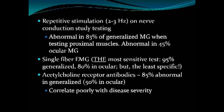Single fiber EMG is the most sensitive test for myasthenia, picking up 95% of generalized myasthenia and about 80% of ocular. It is difficult to perform, however, and is the least specific — many other conditions can reveal abnormalities on single fiber EMG. Frequently, a blood test is sufficient: the acetylcholine receptor antibody. We can measure that antibody, and it's a very good test — elevated in 85% of patients with generalized myasthenia, though only about 50% of the time in pure ocular myasthenia.